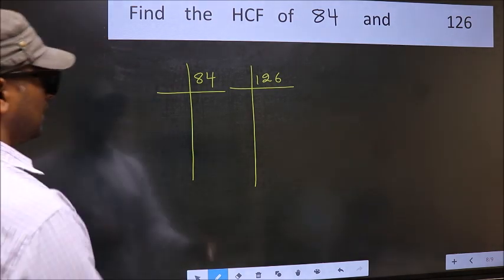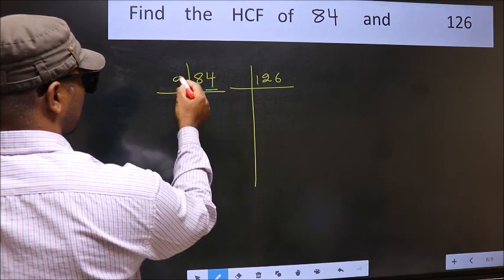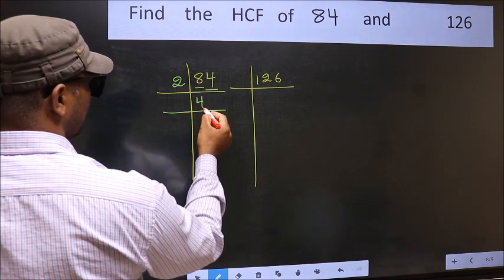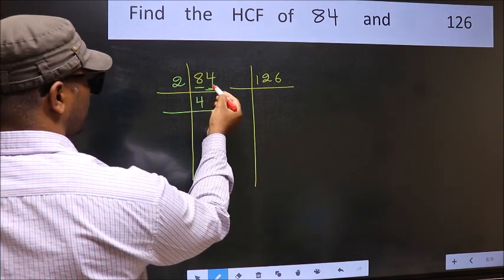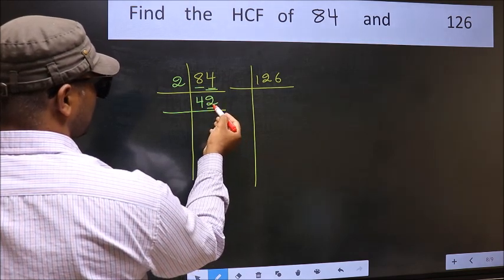Next, in this number, last digit 4 is even, so take 2. First number 8, when do we get 8 in 2 table? 2 fours are 8. The other number 4, when do we get 4 in 2 table? 2 twos are 4. Now last digit 2 is even, so take 2.